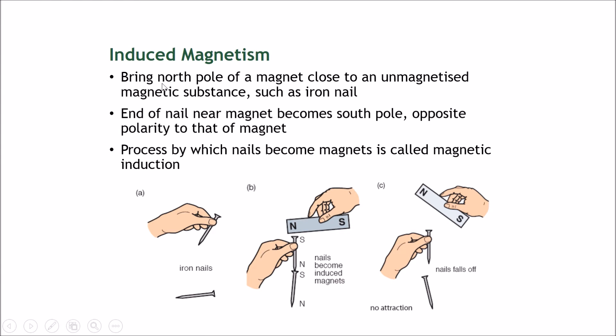The process is to bring the north pole of a magnet close to an unmagnetized magnetic substance, such as an iron nail. You bring it near, and the end of the nail near the magnet becomes a south pole.